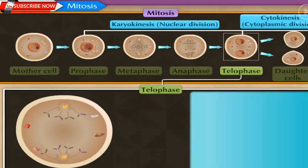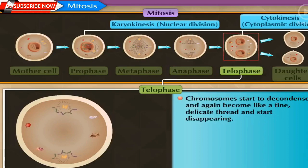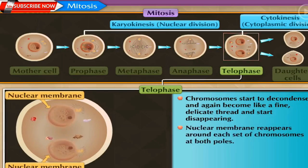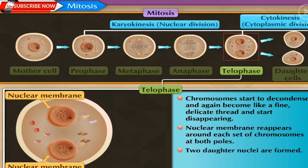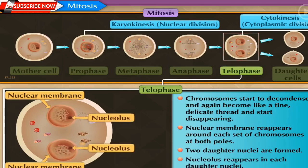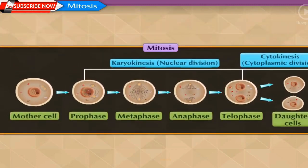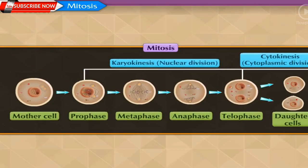In telophase, chromosomes which have reached the opposite poles now start to decondense — each chromosome again becomes like a fine delicate thread and starts disappearing until invisible. The nuclear membrane reappears around each set of chromosomes at both poles. Finally, two daughter nuclei are formed, nucleolus reappears in each, and spindle fibers completely disappear. By the end of telophase, karyokinesis is complete, resulting in two nuclei with the same number of chromosomes.